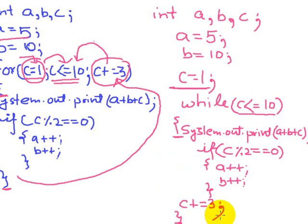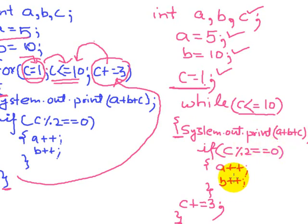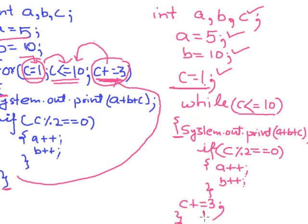The execution of this while loop is as follows: first, three variables are declared, then 5 and 10 are assigned to a and b respectively, then 1 is assigned to c. Then it checks the condition c is less than or equal to 10 — if true, the set of statements executes, checking if c mod 2 equals to 0; if true, a plus plus and b plus plus are executed. Since c is the counter variable controlling how many times the while loop executes, the updation — c plus equals to 3 — is placed as the last statement, after which control returns to the testing expression, and so on.